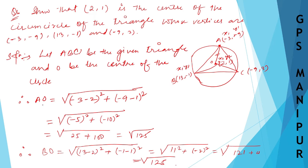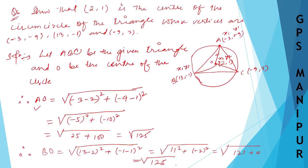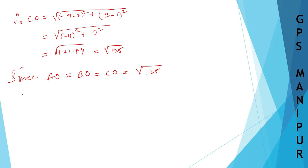Since we have found that AO, BO, and CO are all equal—AO = BO = CO = √125—and these are radii of the circle, and the radii must be equal, therefore O is the center of the circumcircle. That's all, thank you so much, we will meet in the next video.